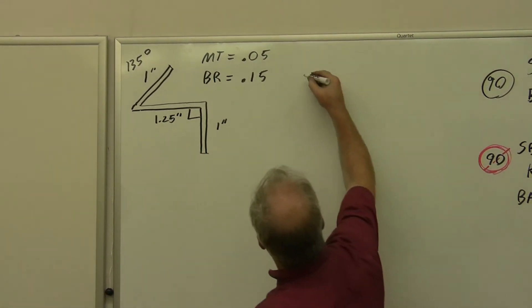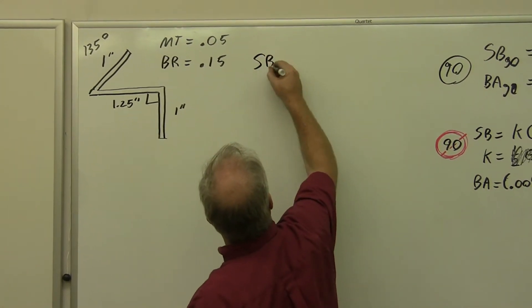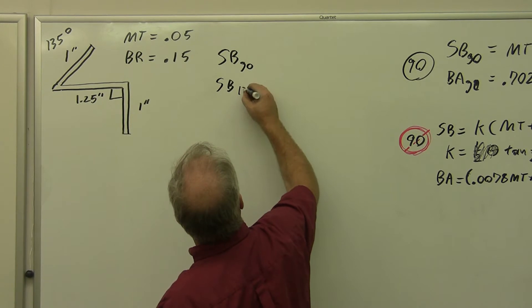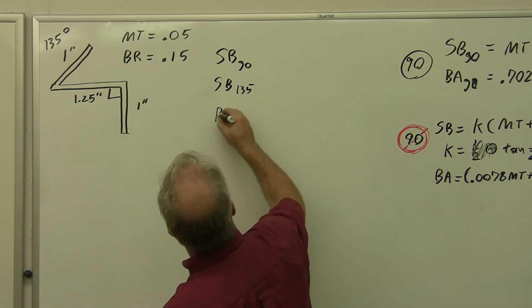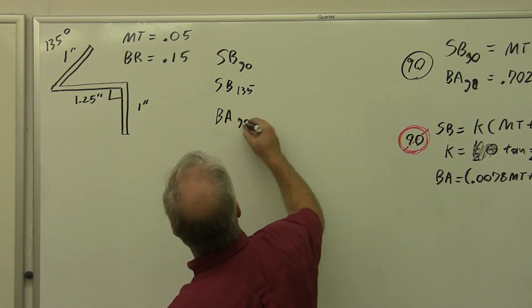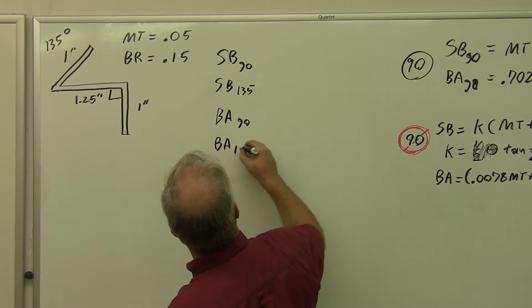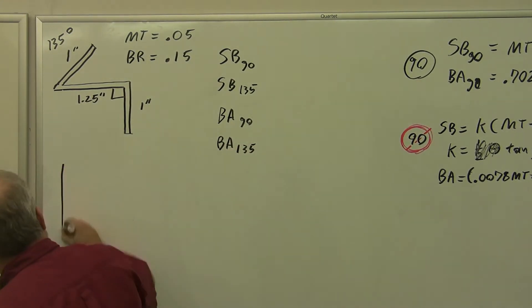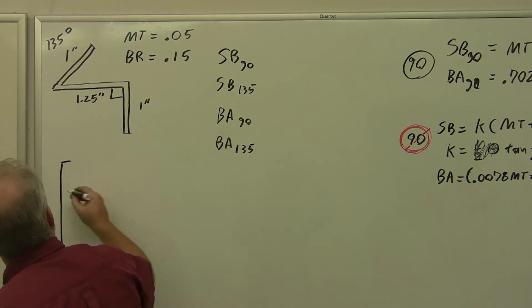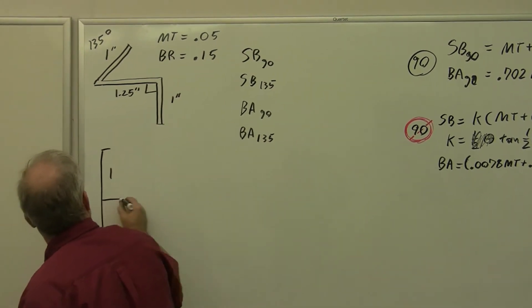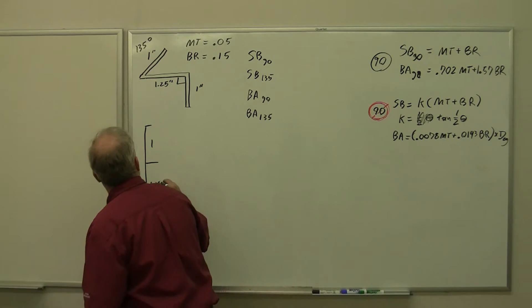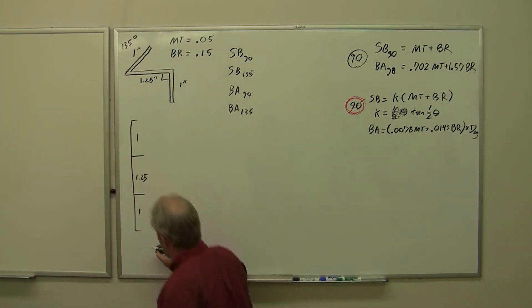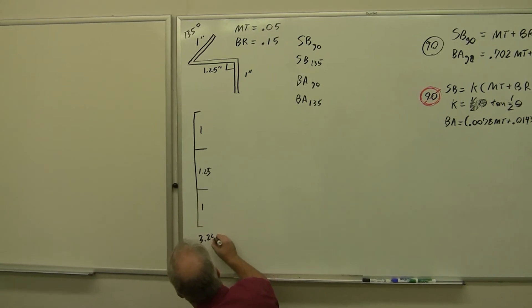I'm going to write up here what all the pieces we need to calculate. We need setback 90 and setback 135, bend allowance 90 and bend allowance 135. Now our flat across here would just be one inch, then 1.25 inches, then one more inch, giving me a total of 3.25 inches.